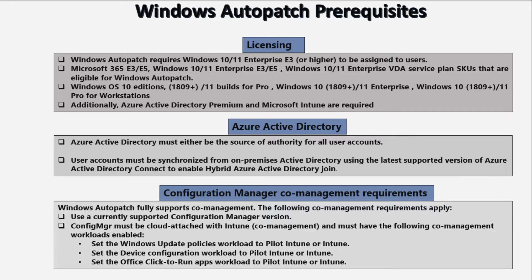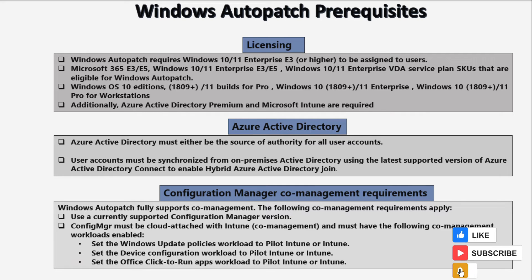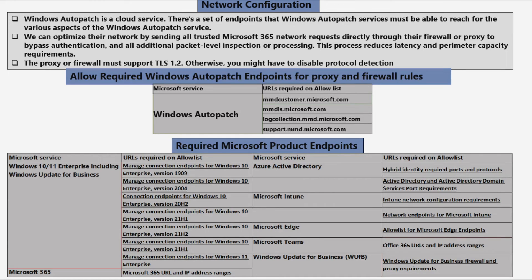With respect to the Active Directory requirement, Azure Active Directory must either be the source of authority for all accounts, or user accounts must be synchronized from on-premises Active Directory using the latest supported version of Azure AD Connect to enable hybrid Azure AD join. For Configuration Manager co-management, we should use a currently supported version of Configuration Manager, and it must be cloud-attached with Intune — that is, co-managed — and must have the following co-managed workloads enabled: Windows Update Policy, Device Configuration, and Office Click-to-Run app workloads, either on Pilot Intune or Intune.